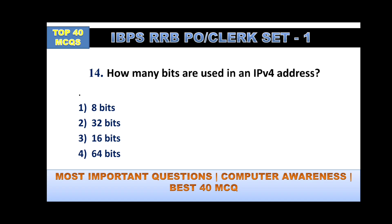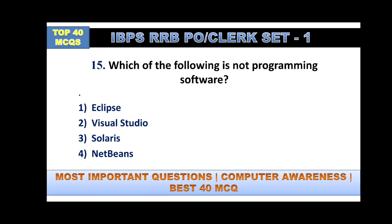Question number 14: how many bits are used in IPv4 addresses? There are two types — IPv4 and IPv6. IPv4 uses 32 bits and IPv6 uses 128 bits. So the answer is option number two, 32 bits.